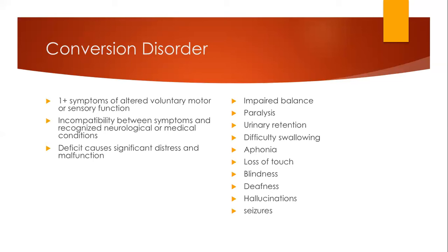Then we have conversion disorder. The DSM-5 diagnosis for conversion disorder is that they have one or more symptoms of altered voluntary motor or sensory function symptoms. There's incompatibility between the symptoms and any recognized neurological or medical condition, and the deficit can cause significant distress and malfunction. It can often be manifested as impaired balance, paralysis, urinary retention, difficulty swallowing, aphonia, loss of touch, blindness, deafness, hallucinations, and seizures. The most common are paralysis and urinary retention.